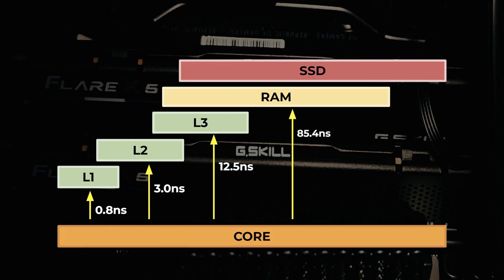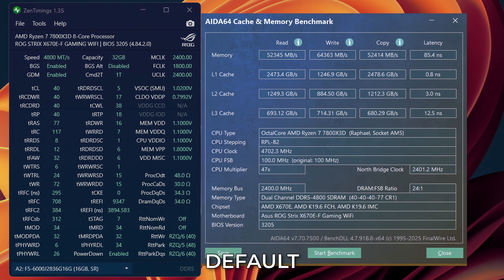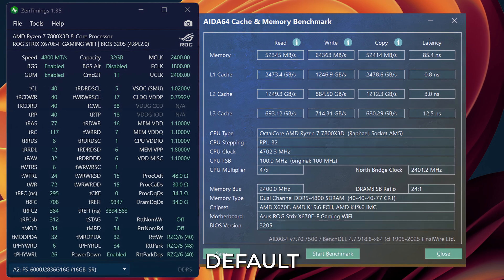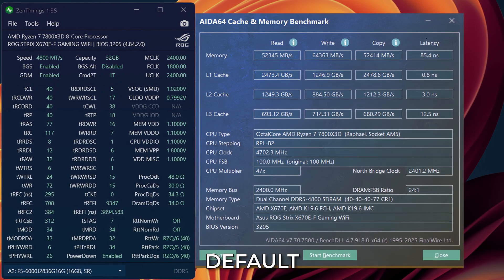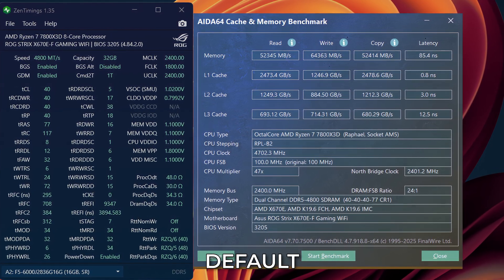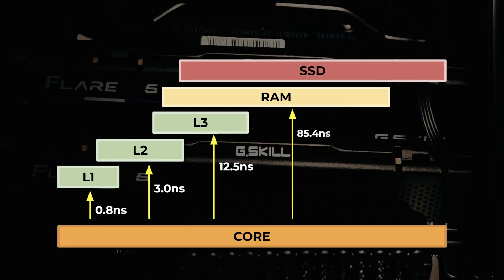Every time the CPU has to go all the way to RAM, latency comes into play. My memory at default settings has about 85 nanoseconds of latency, and those extra nanoseconds add up quickly and cost performance.